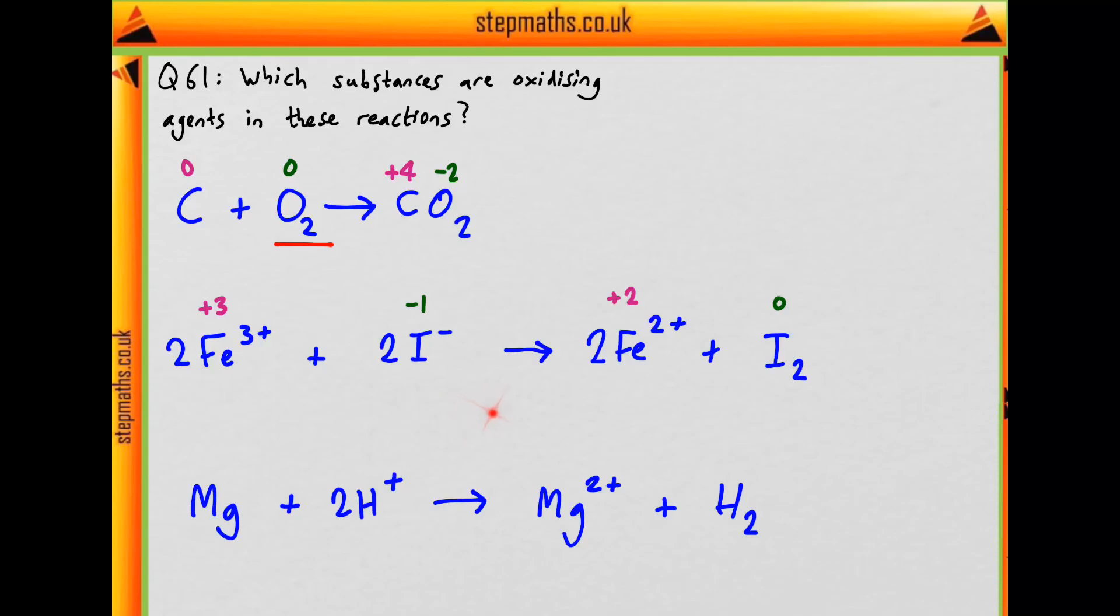So what's been oxidised? The iron has gained one electron to form iron 2+ from iron 3+. The iodide has lost an electron to go from -1 to 0. So if iodide's been oxidised, then the iron 3+ must be the oxidising agent.